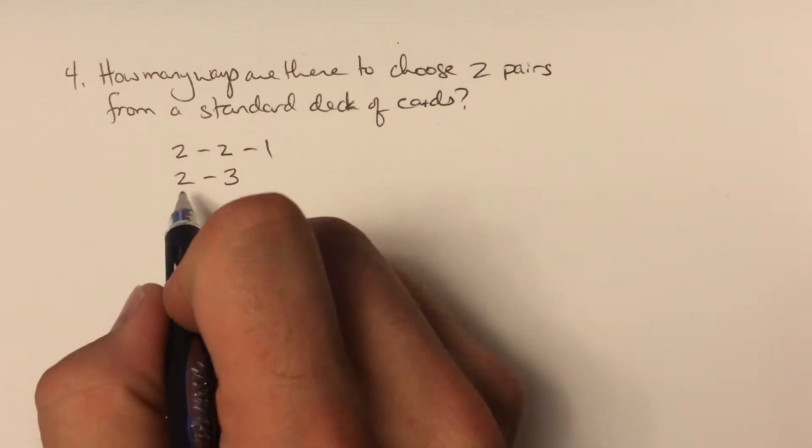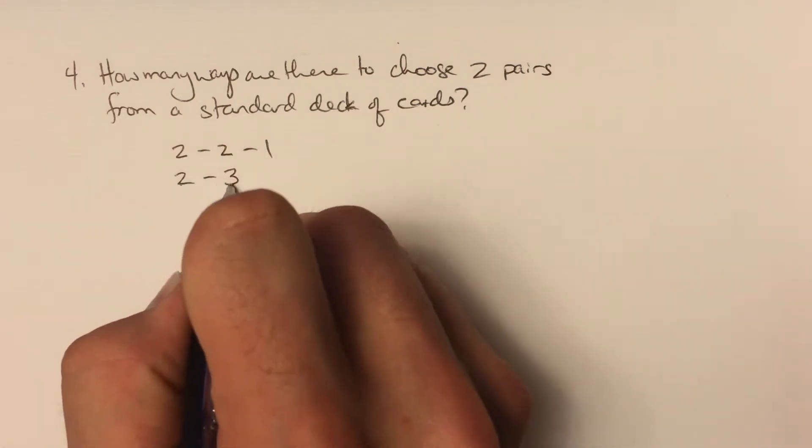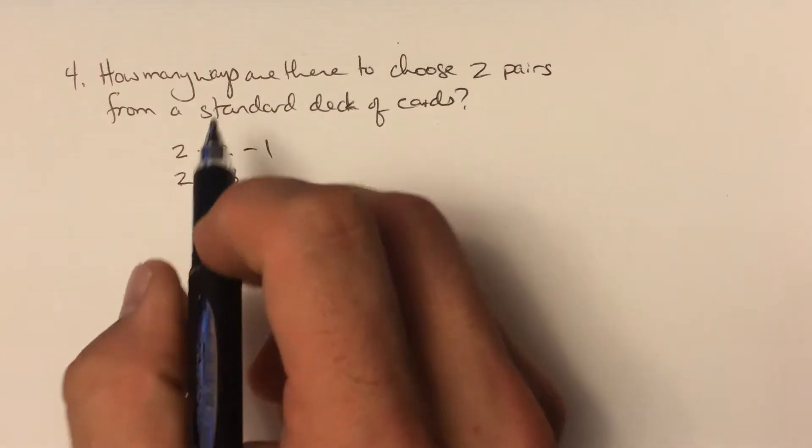You can see there are two pairs: there's a pair here and a pair here, plus another kind of copy of that card.